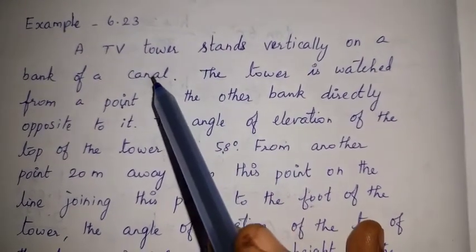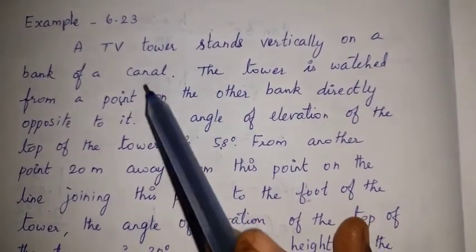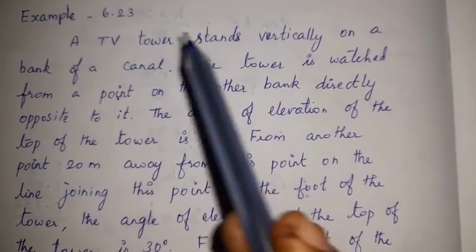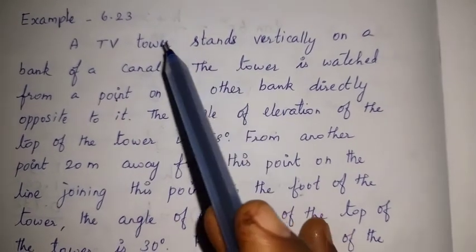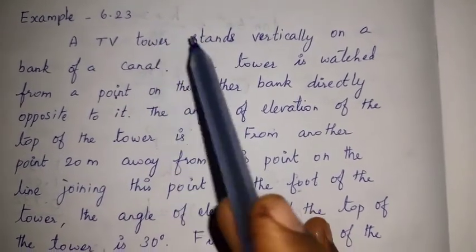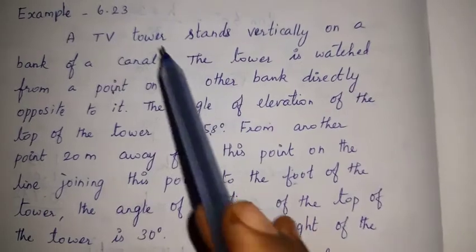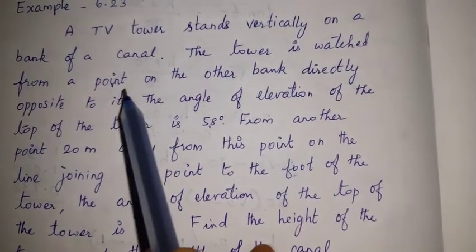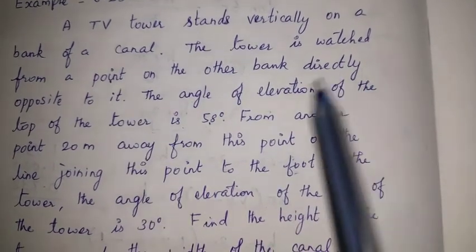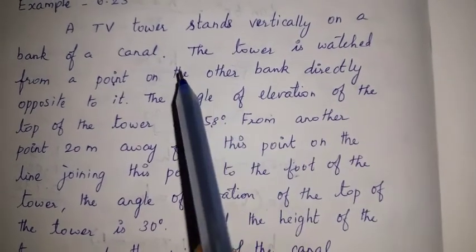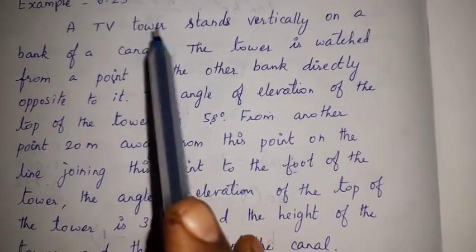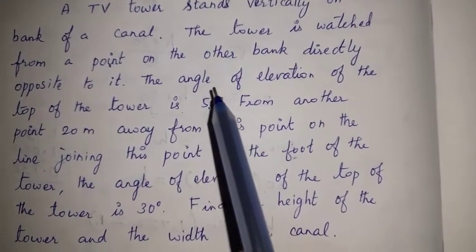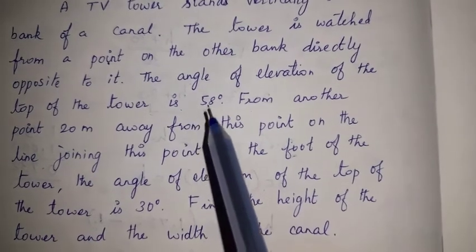The tower and canal are on opposite banks. From the point directly opposite, the angle of elevation of the top of the tower is 58 degrees.